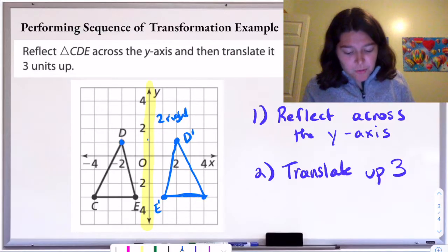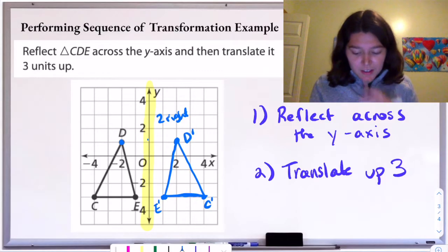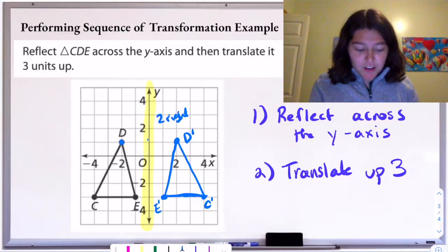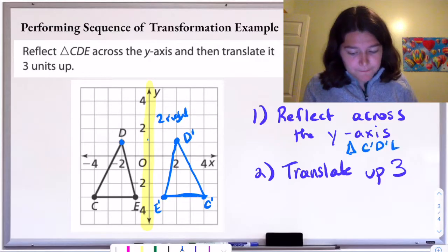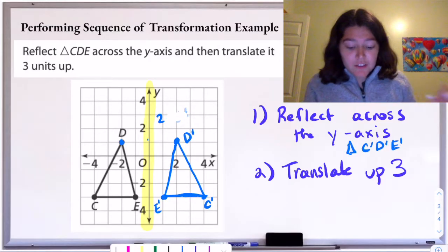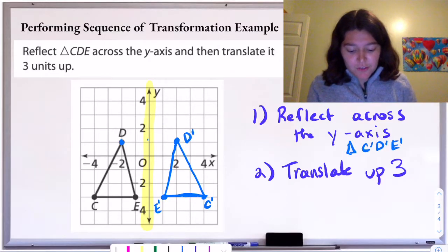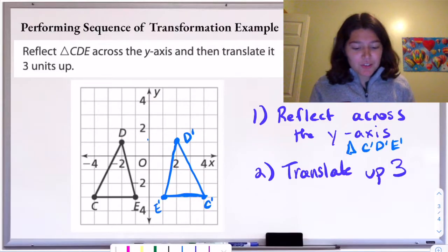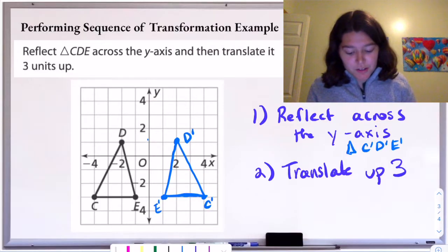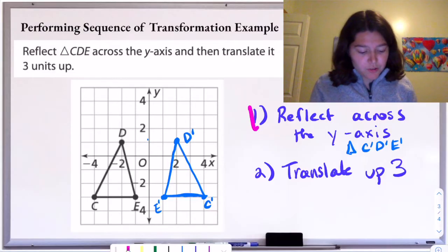The general rule is we're finding our distance from the line of reflection and then going that same distance but in the opposite direction. So once we do that reflection, we will get here — we're going to call this triangle C prime, D prime, E prime. We have to be careful because we're not done, right? We've just done step one. So now it's time to do step two: translate up three.